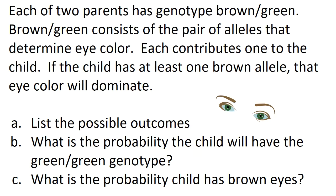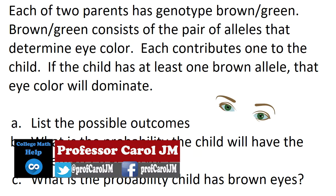Each of two parents has the genotype brown-green. Brown-green consists of the pair of alleles that determine eye color. An allele is a mutation at the same place on a chromosome. Each parent contributes one to the child.